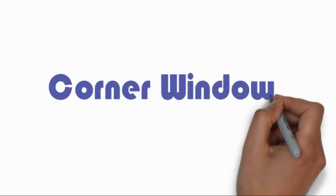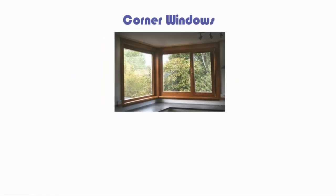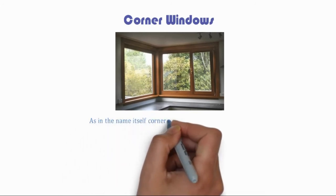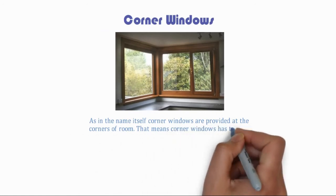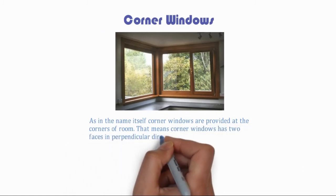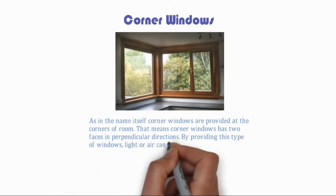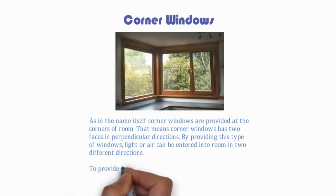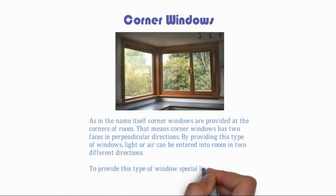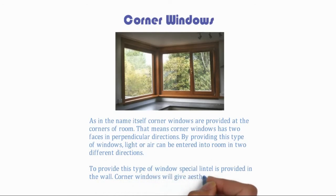Corner windows, as the name suggests, are provided at the corners of a room. That means corner windows have two faces in perpendicular directions. By providing this type of window, light or air can enter the room from two different directions. To provide this type of window, a special lintel is provided in the wall. Corner windows will give aesthetic appearance to the building.